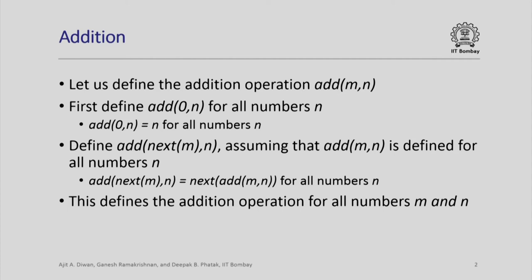We want to define the addition operation: add of two numbers m and n. We will first define what is meant by adding 0 to n for all numbers n. For any number n, we define add(0, n) to be n for any natural number n. This defines the operation when the first argument is equal to 0.